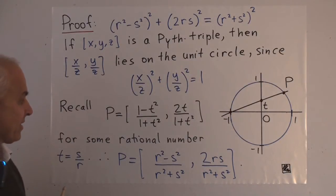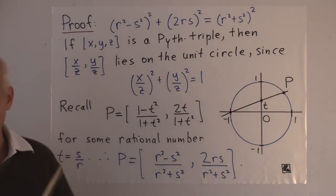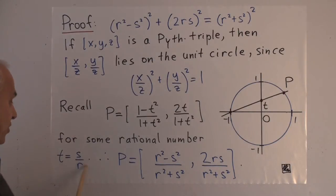And when we unravel that, the number t can be written as s over r because it's a rational number, where s and r are natural numbers.